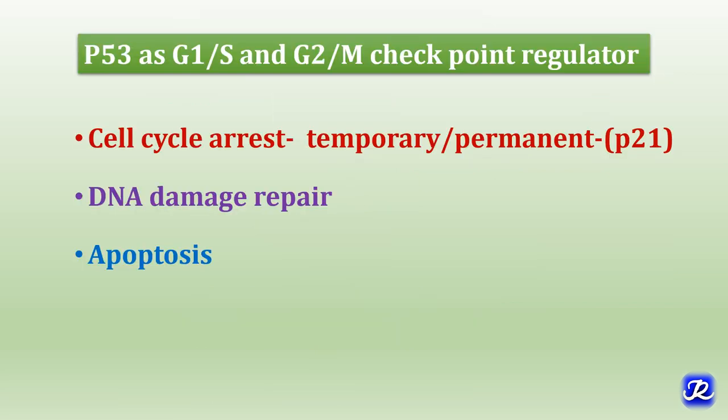Now let's see how P53 acts as a G1/S and G2/M checkpoint regulator. P53 is a tumor suppressor gene and acts as a central monitor of stress in the cell, which can be activated by anoxia, inappropriate oncogene signaling, or DNA damage. Activated P53 controls the expression and activity of genes involved in cell cycle arrest, DNA damage repair, cellular senescence, and apoptosis, thereby suppressing the neoplastic transformation of cells.